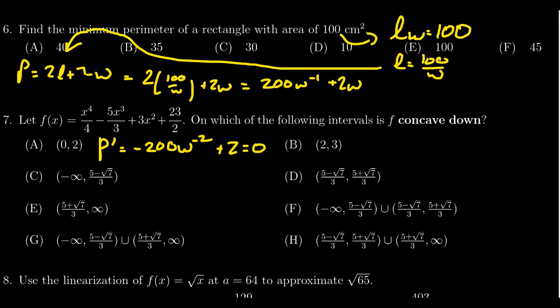It is undefined at W equals zero, but if the width was equal to zero, that would be impossible with our constraints. So we don't have to worry about that. We have to figure out when this equals zero. So I'm going to add 200 W to the negative two to both sides. So we get two equals 200 W to the negative two. Divide both sides by 200. This is going to give you one over 100.